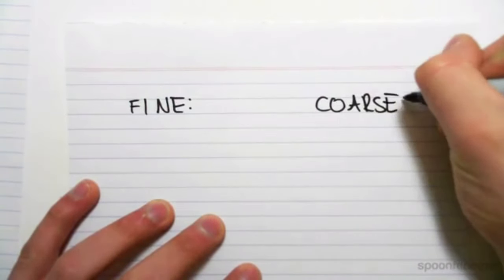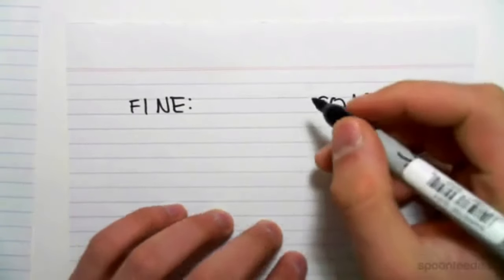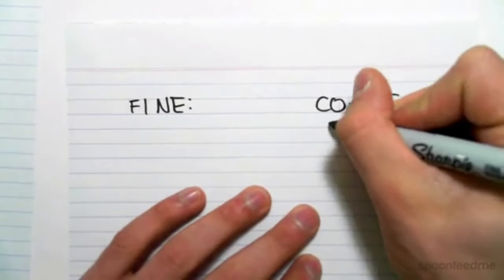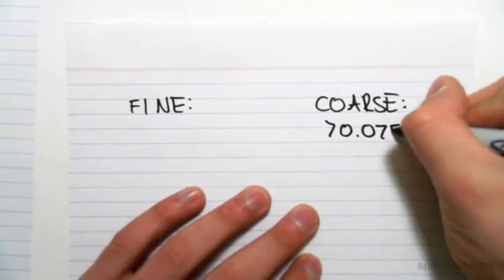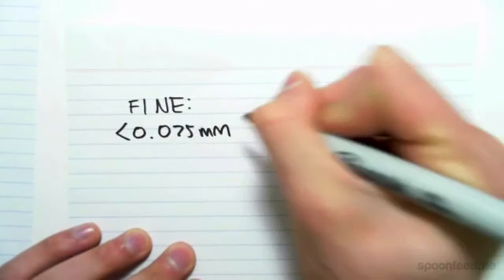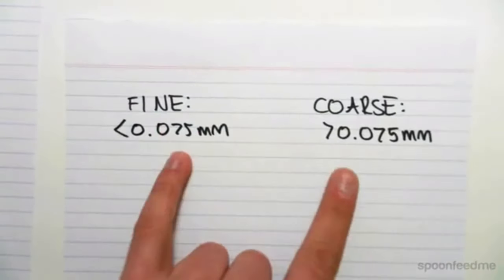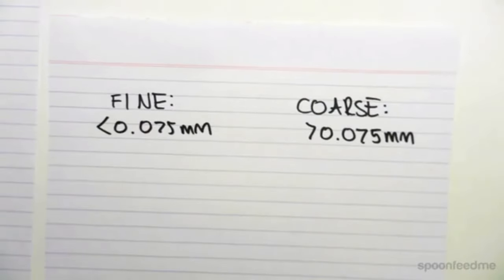We define a coarse soil as having particle sizes greater than 0.075 millimeters. And a fine particle is having less than 0.075 millimeters. The reason we use this number is just because of the way we actually measure it.